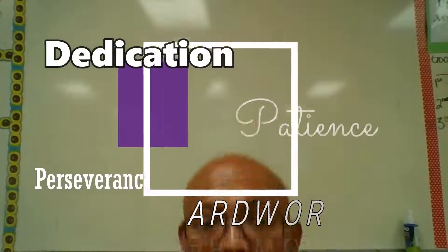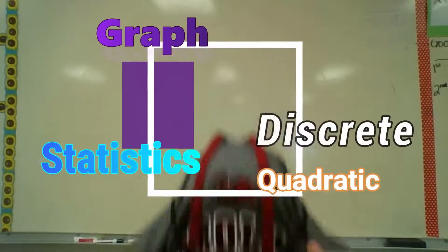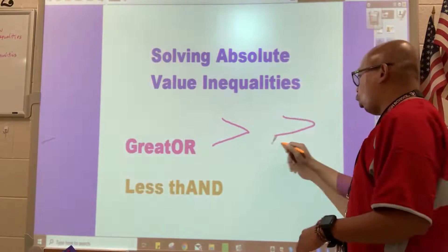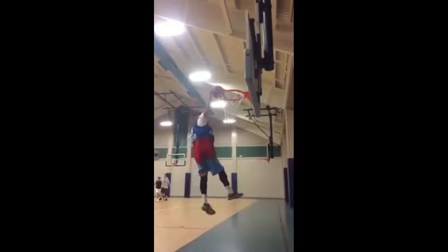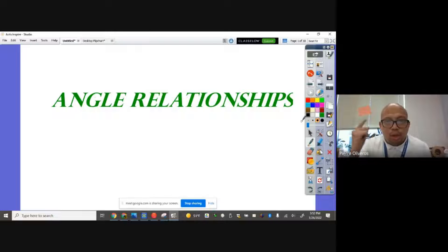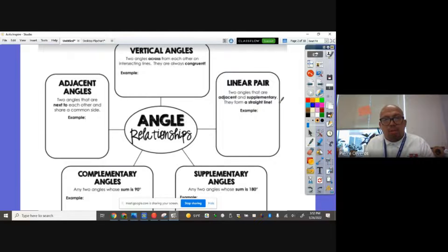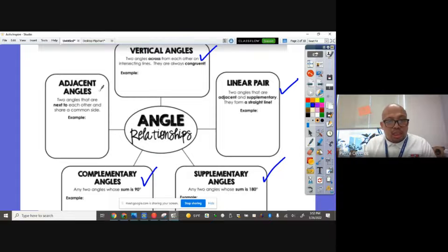Yo, this is Mr. O and today we're gonna learn different kinds of angle relationships. So what are the angle relationships? There are several ones: vertical angles, linear pair, supplementary angles, complementary angles, and adjacent angles. We're gonna go over each of these.